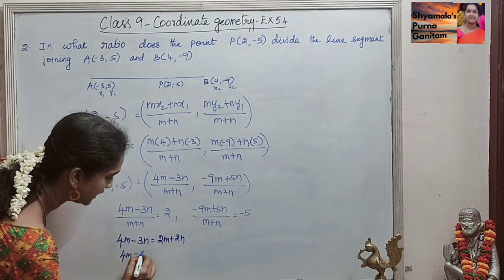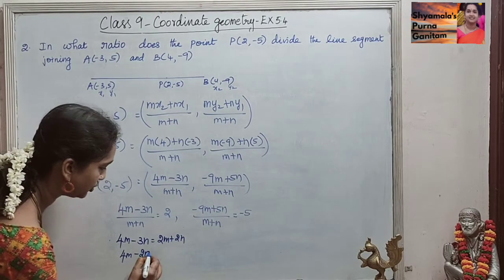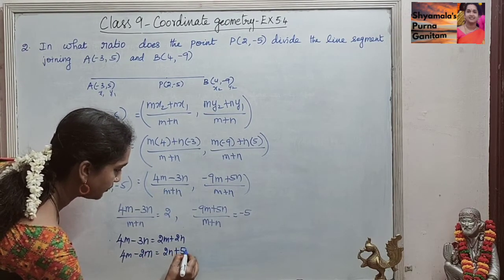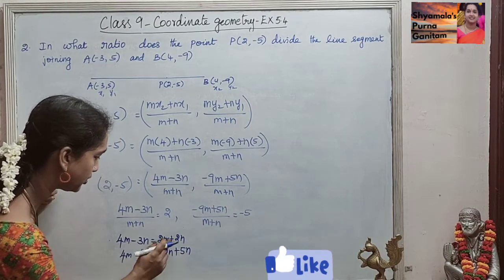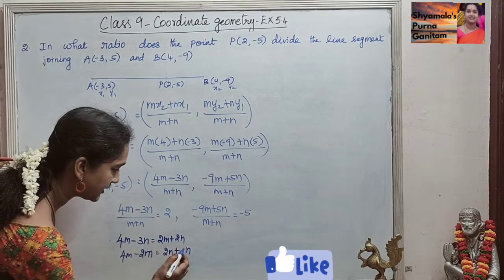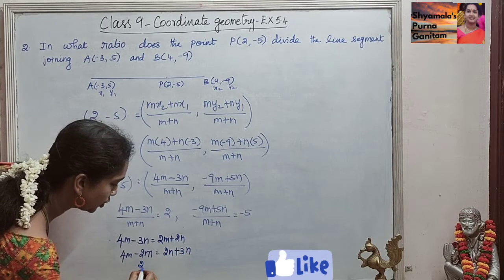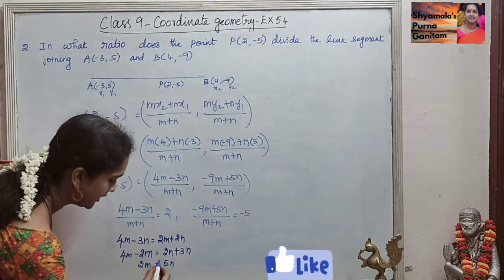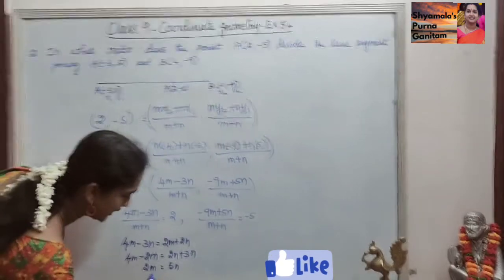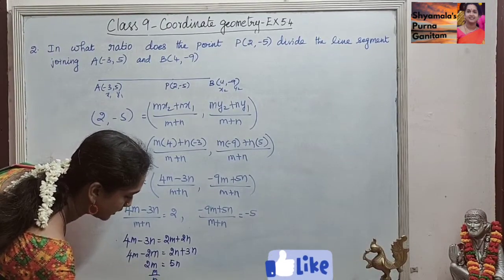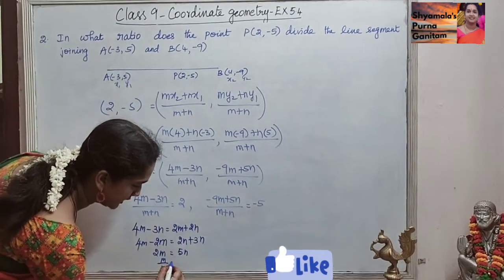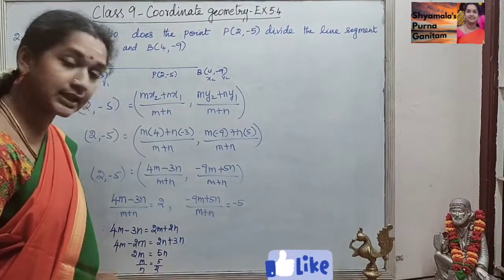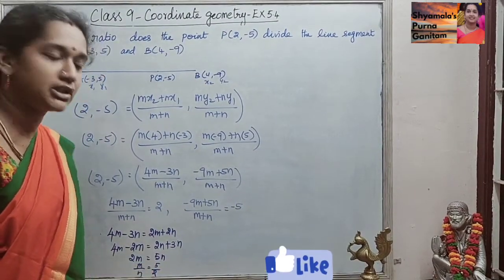So 4m - 2m equals 2n + 3n. So 2m equals 5n. When we rewrite this, we get m/n. Bringing n across, m/n is equal to 5/2. So if we simplify this also, we will get the ratio as 5 is to 2.